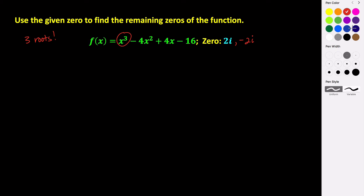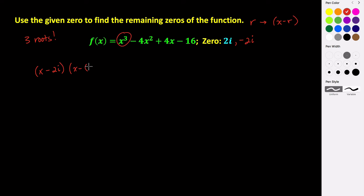Recalling that if we are given some zero r, then x minus r is a factor of that polynomial function, we can start to write this polynomial in factored form using our given zeros. So we have x minus 2i and x minus negative 2i, which gives us x minus 2i and x plus 2i.